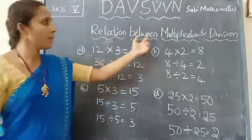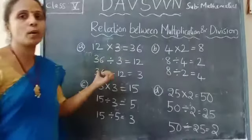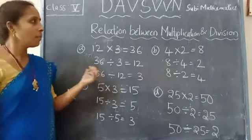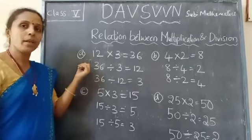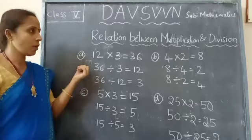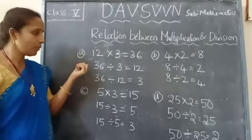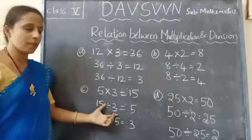See the relation between multiplication and division using the following examples. Multiplication is inverse of division and division is inverse of multiplication. We will see using the following examples.